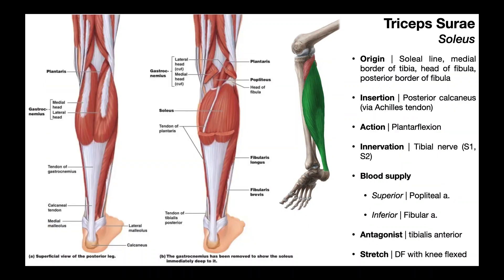The soleus is the third head of triceps surae, and it is deep to the gastroc. In this view, the gastroc medial and lateral heads have been removed to reveal the underlying soleus. The origin of the soleus is on both the tibia and fibula: the soleal line — a small bony elevation on the posterior aspect of the tibia — the medial border of the tibia, the head of the fibula, and the posterior border of the fibula. Like the gastrocnemius, the insertion of the soleus is on the posterior calcaneus via the Achilles tendon; as you go distally, the soleus becomes more tendinous and blends with the Achilles tendon.